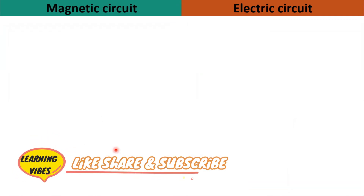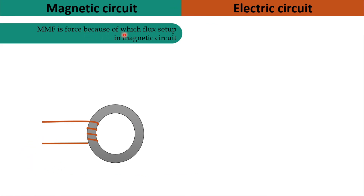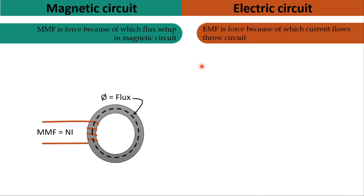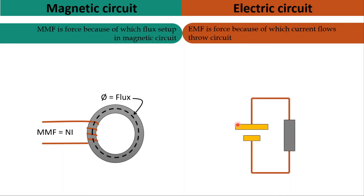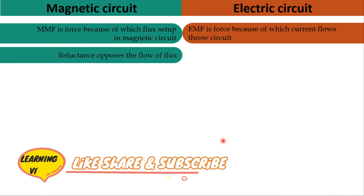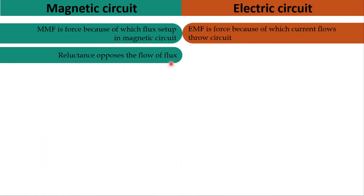MMF is the force because of which flux sets up in a magnetic circuit. Here, MMF equals N times I, where N is the number of turns and I is the current passing through the conductor. When we apply MMF, magnetic flux sets up in the magnetic circuit. Similarly, in an electrical circuit, EMF is the force because of which current flows through the circuit.